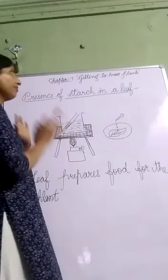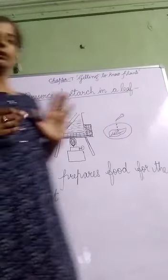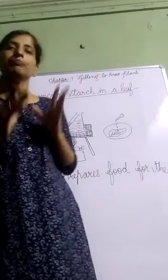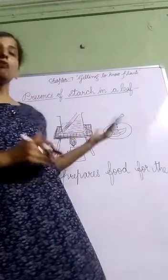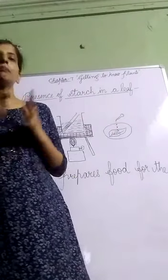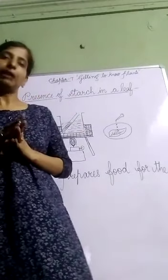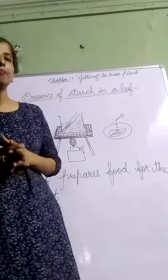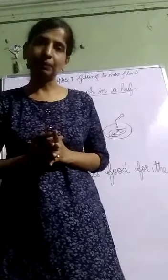In this way, by this activity, we prove the presence of starch in a leaf. This was all about how the leaf is important for the plant — how leaf prepares food, what is transpiration, and how we can detect the presence of starch. Now let's come to the main important part of a plant, that is the root. Root is a very important part of the plant. Without root, a plant cannot live — if you cut the root of any plant, it cannot survive.